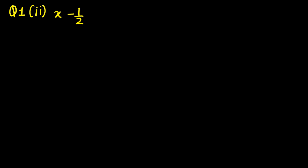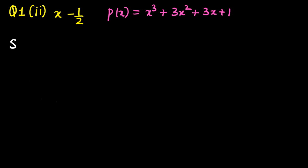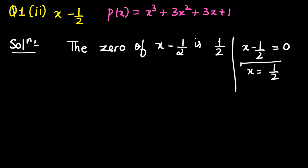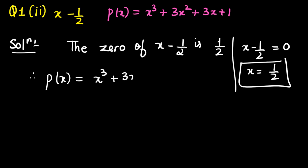The next question is x minus one-half, and the polynomial remains the same: x³ + 3x² + 3x + 1. The zero of x minus one-half is one-half, because we equate x - ½ = 0, giving x = ½. We put this into the polynomial, so p(½) = (½)³ + 3(½)² + 3(½) + 1.